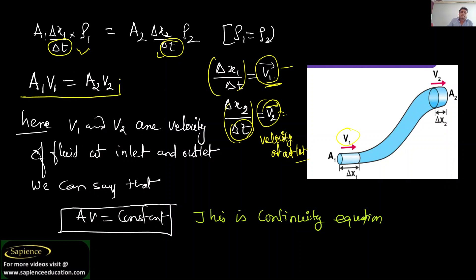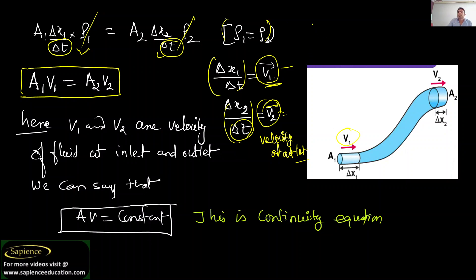We can write A1·v1 equals A2·v2 because rho1 equals rho2 — they cancel out, since we assume the same liquid with unchanged density flowing through. For example, if water is entering, its density is not changing from one place to another. So we get A1·V1 = A2·V2, where V1 and V2 are velocities — do not confuse them with volume.